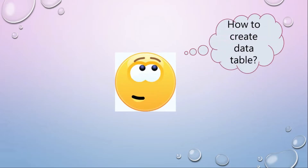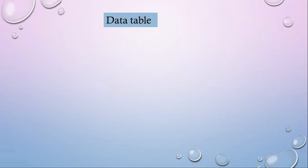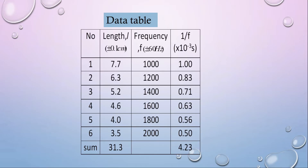How to create a data table? A data table consists of a few columns and rows. The number of rows and columns depends on the number of data collected from the experiments. Each column must have a name, symbol of the quantities, uncertainty — which is the smallest scale of the apparatus — and the units of the quantities.